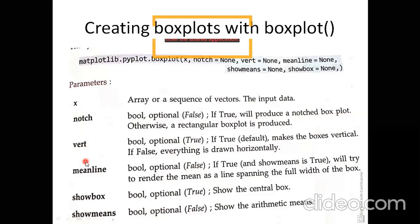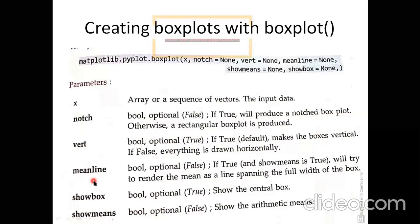If vert is true the box will be in vertical position; if false it will be horizontal. By default it is always true, so if you don't specify it your box plot will be vertical. Next is meanline — if you want to show the mean line, write meanline equals to 2, and it will appear.